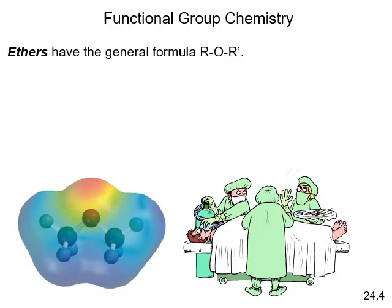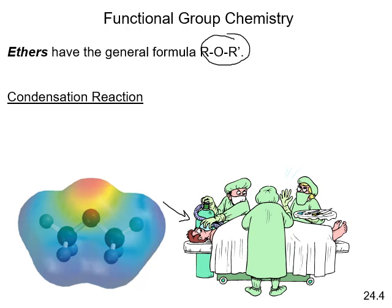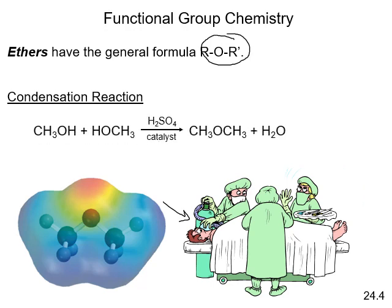Ethers have the general structure R–O–R, where both sides are carbon-containing compounds. Ether used to be used as an anesthetic for surgery, though it no longer is. To create ethers, you can do a condensation reaction — water is condensed out, squeezing the two pieces together to form the ether.